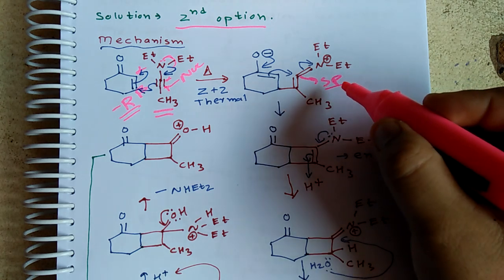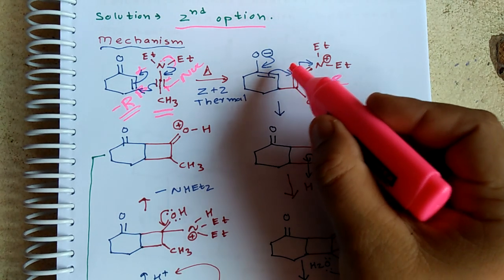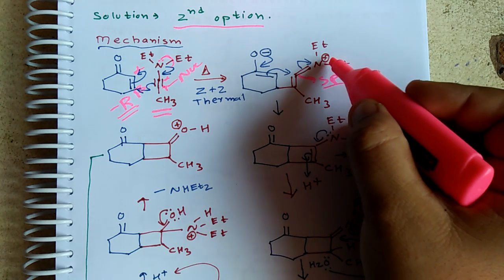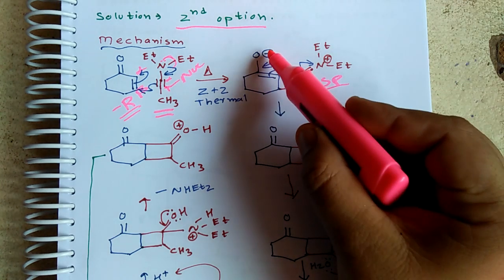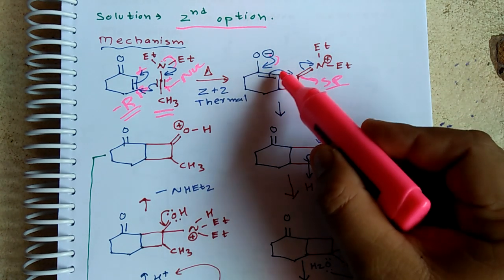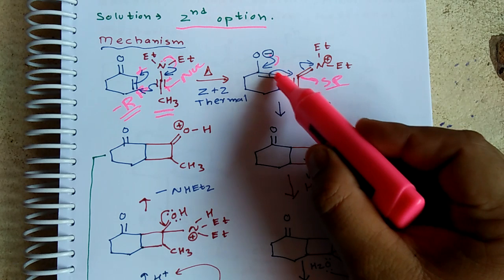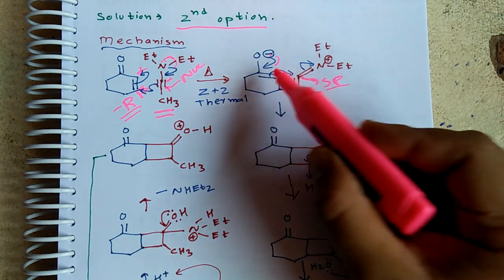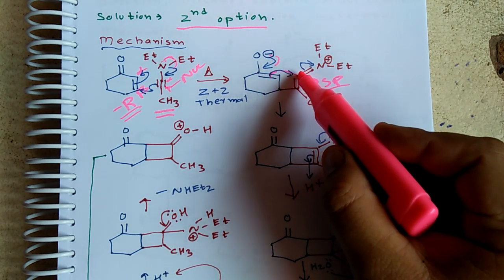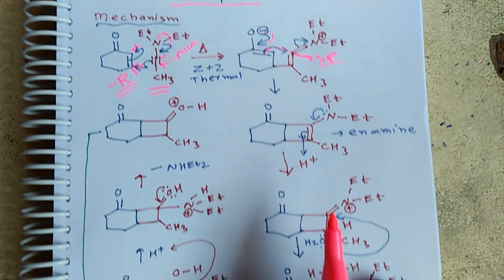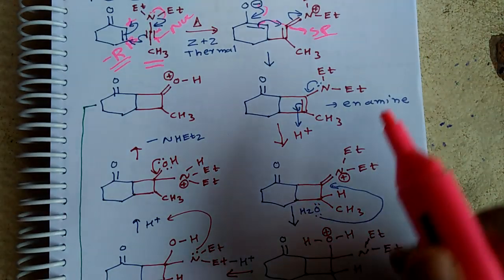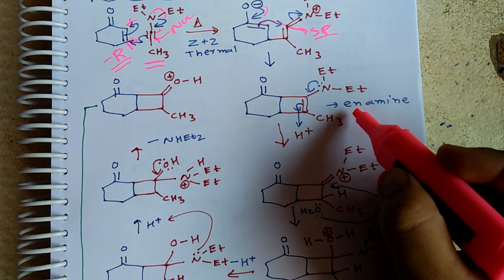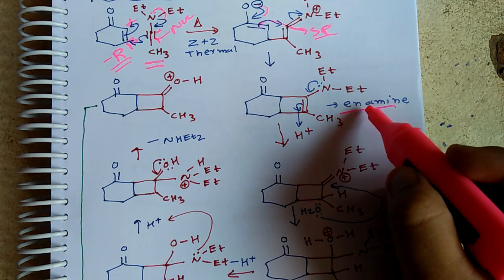Once this nitrogen gets a proton and donates electrons, this will shift again. Remember that the alpha position is nucleophilic in the enone case, and here the alpha position is electrophilic. So this will attack at this position, and we are getting a four-membered cyclobutene ring derivative. When you look at this molecule carefully, it is like an enamine.